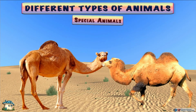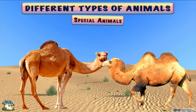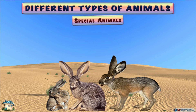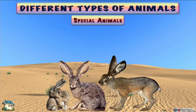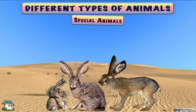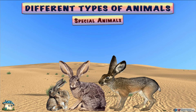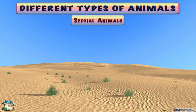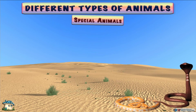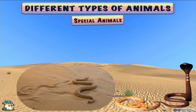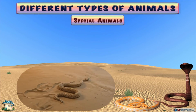Animals like camels store fats in their hump, which they consume during drought or while traveling in deserts. Jackrabbits have long ears which support them to stay cool in the warm and harsh climate of a desert. Many other animals like snakes change their way of crawling to adapt to the warm and harsh climate of a desert.